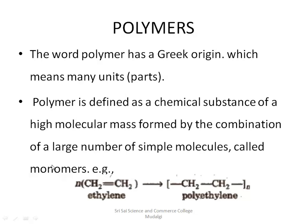To form a polymer we require small units or small parts which are referred to as monomers. These monomer units are joined together to form a polymer. For example, a single monomer holds hands with one more monomer to form a dimer, then a trimer, and so on — n number of monomers joined together form polymers, which usually have high molecular mass because the monomers are joined together.